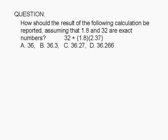Consider the following calculation: 32 plus 1.8 times 2.37. Assuming the numbers 1.8 and 32 are exact numbers, how should the result be reported?